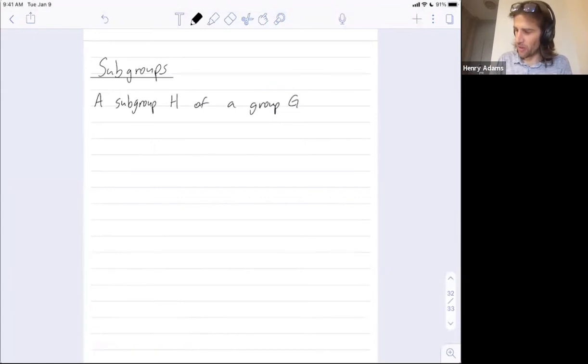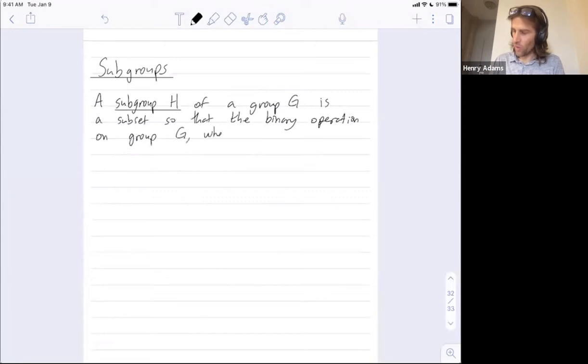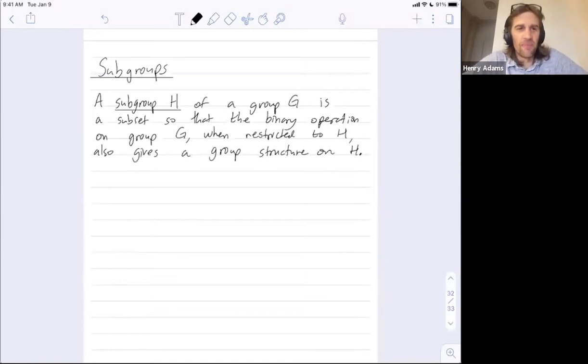And I'm going to tell you what a subgroup is: it's a subset so that the binary operation on group G, when restricted to H, also gives a group structure on H.